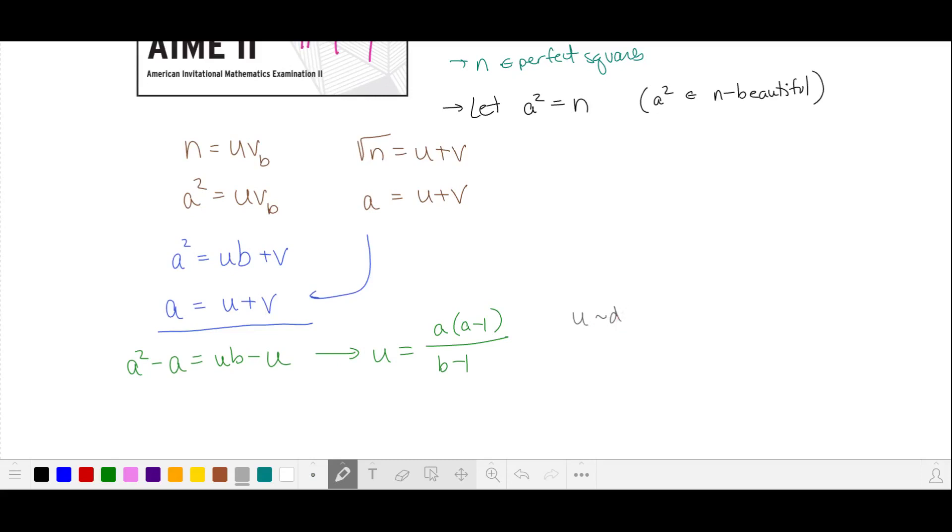Since u is one of our digits, u is an integer, so according to this fraction, we must have the denominator b minus 1 divide into the numerator.